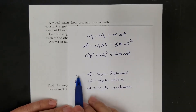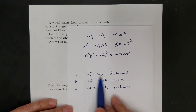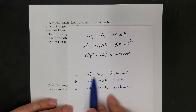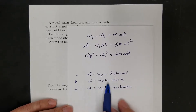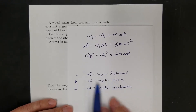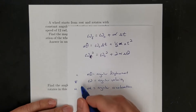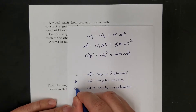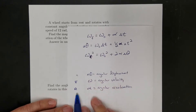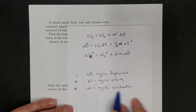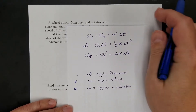We just have different variables. So instead of x, I have angular displacement, which is theta. And instead of velocity, I have angular velocity, which is omega. And instead of regular acceleration, I have alpha, which is angular acceleration.